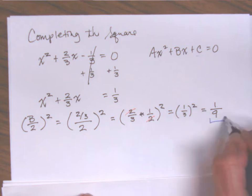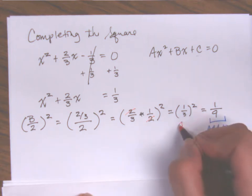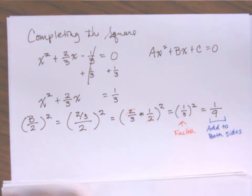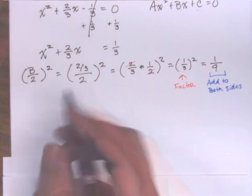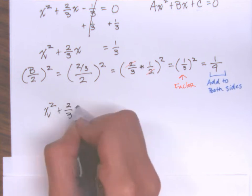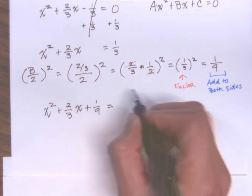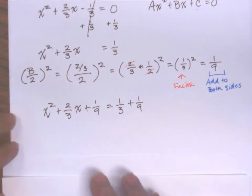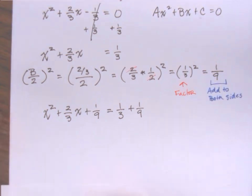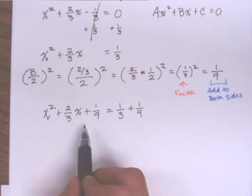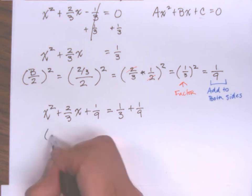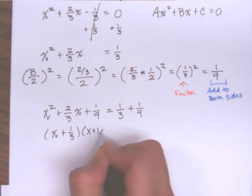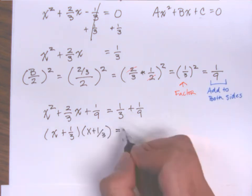This is what we add to both sides, and this number inside the parentheses is our factor. Adding one-ninth to both sides, I now have x squared plus two-thirds x plus one-ninth equals one-third plus one-ninth. Let's factor the left side — it is now a perfect square trinomial, and the factor is one-third. So I have x plus one-third times x plus one-third, and the right side one-third plus one-ninth equals four-ninths.